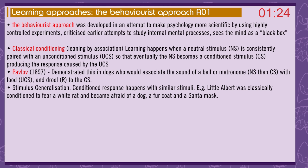Classical conditioning: learning by association. Learning happens when a neutral stimulus is constantly paired with an unconditioned stimulus, so that eventually the neutral stimulus becomes a conditioned stimulus, producing the response caused by the unconditioned stimulus. Pavlov demonstrated this in dogs who would associate the sound of a bell or metronome — the neutral, then conditioned, stimulus — with food, the unconditioned stimulus, and would drool — the response — to the conditioned stimulus.